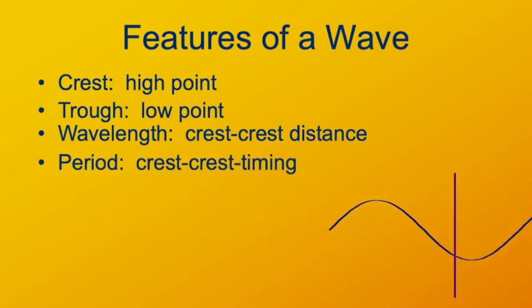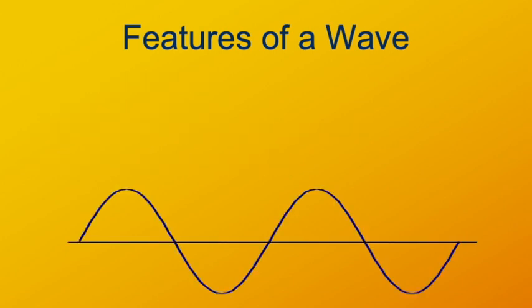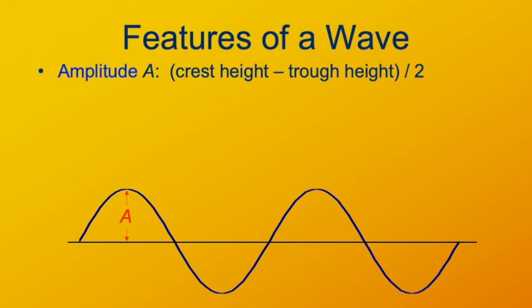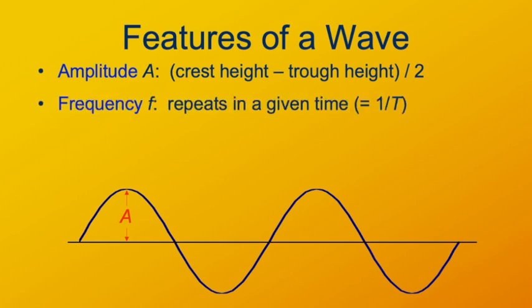The period, just as with oscillations, is the time for one complete cycle. So wavelength is the repeat distance and period is the repeat time. Amplitude, also described just as for an oscillation, is the distance from the equilibrium point. The frequency is the reciprocal of the period — one over T — in hertz, while period is in seconds.